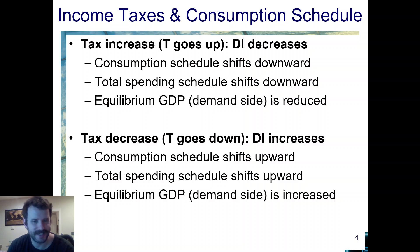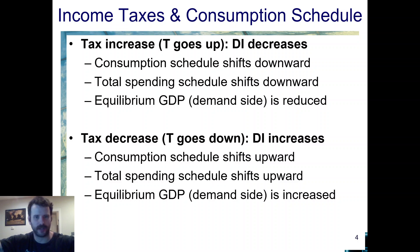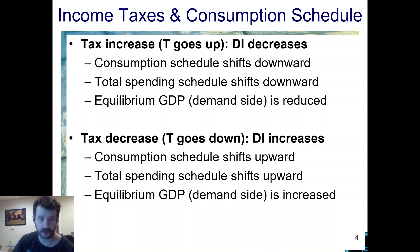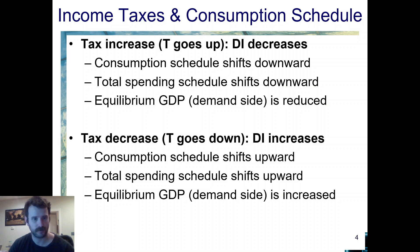Alternatively, if you want to decrease taxes, the thing works in reverse. Decreasing taxes increases disposable income, and that's going to shift the consumption schedule. Actually, to be precise: the consumption schedule is going to move to the right along the curve, but the aggregate expenditure schedule — which uses national income, not disposable income, on the x-axis — is going to shift up.